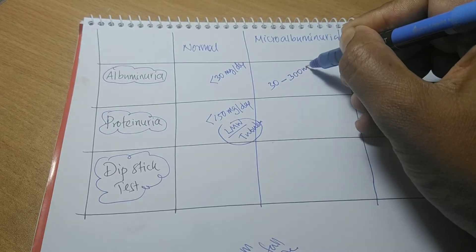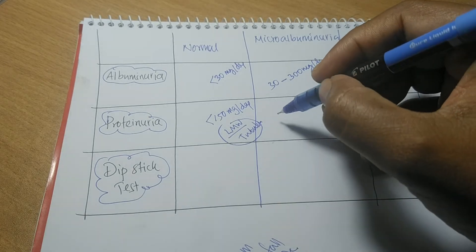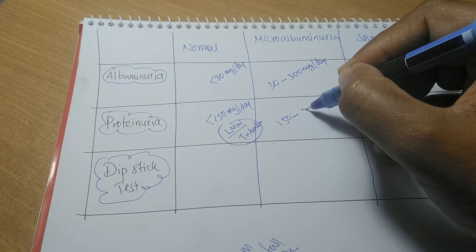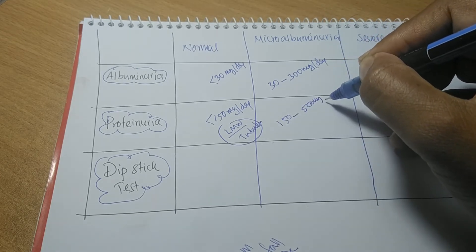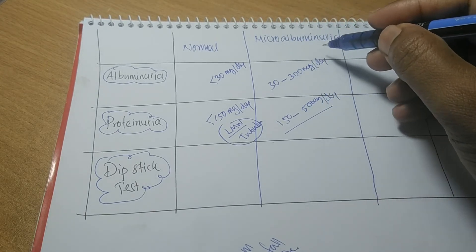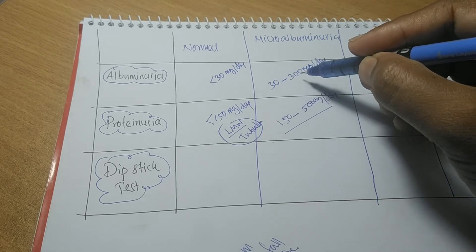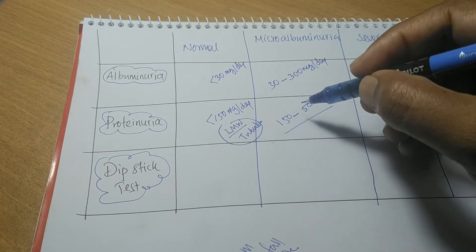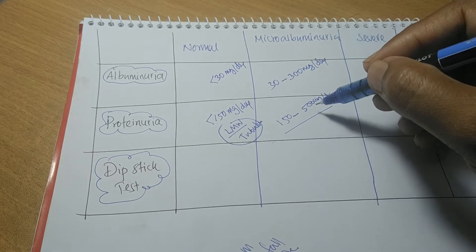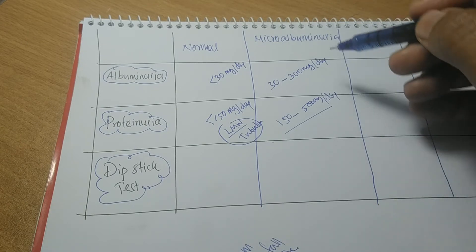Microalbuminuria is when the albumin level in urine ranges from 30 mg to 300 mg per day. At that time, the total proteinuria ranges from 150 mg to 500 mg per day. So microalbuminuria is defined as albumin ranging from 30 to 300 mg per day, while the total protein including albumin is 150 to 500 mg per day.